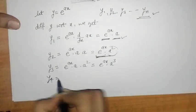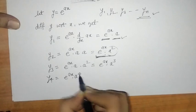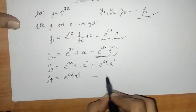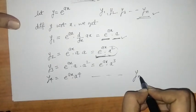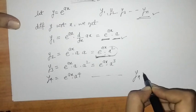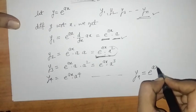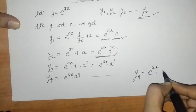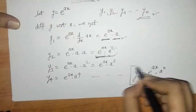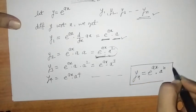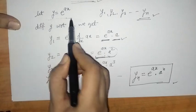Similarly y4 equals e raised to ax into a raised to 4. So we can find the nth derivative: yn equals e raised to ax into a raised to n. This is the nth derivative of this function.